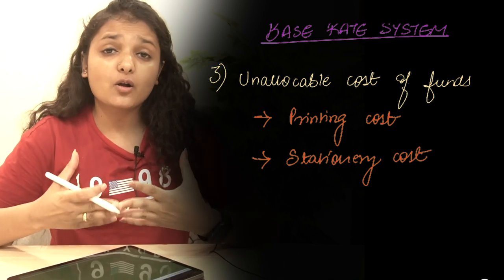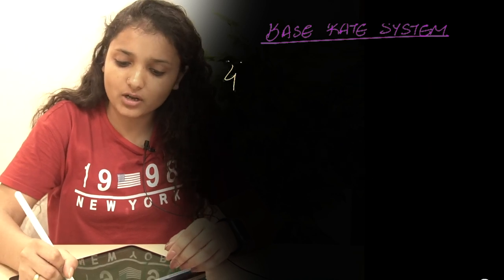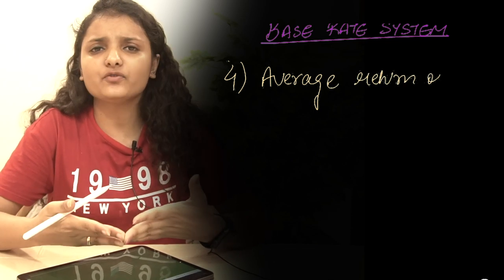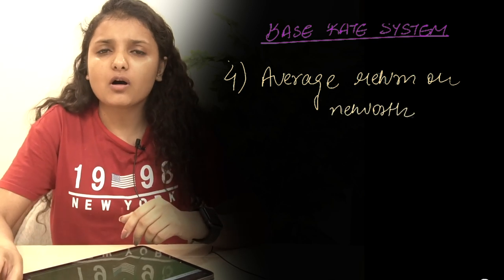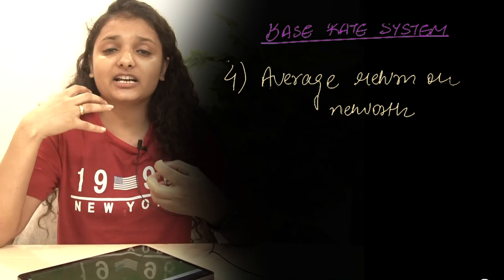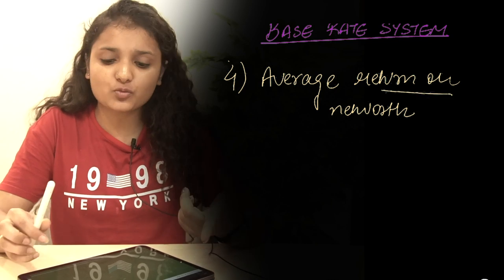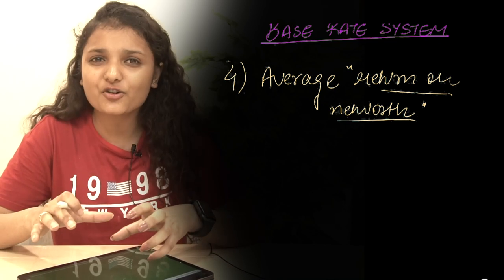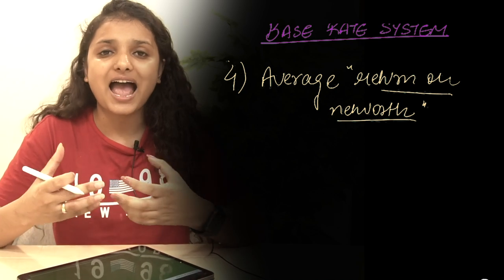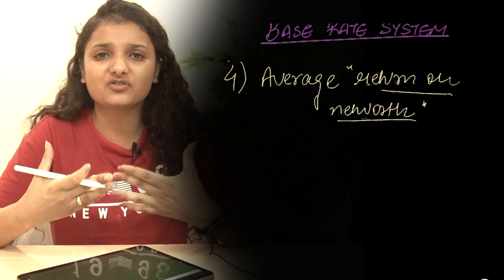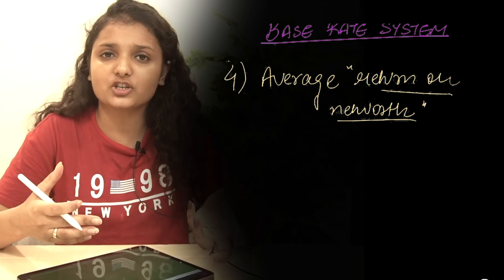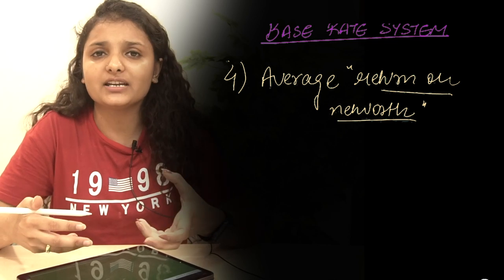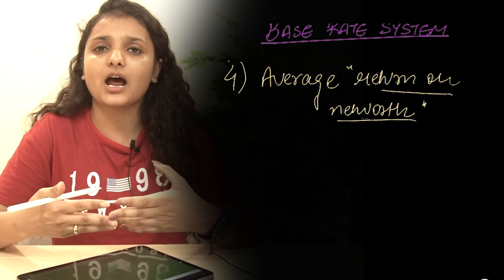The fourth component is the average return on net worth. The hurdle rate is the expected rate that a bank expects to give to its equity shareholders — that is why the term 'return on net worth' is used. The overall cost of funds includes both the actual cost of obtaining funds and the expected rate to be given to equity shareholders. Therefore, average return on net worth also becomes a component while calculating the interest rate under the base rate system.